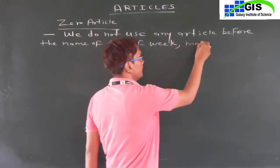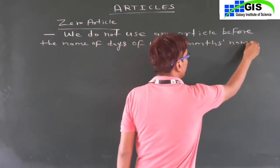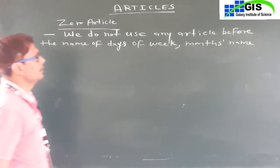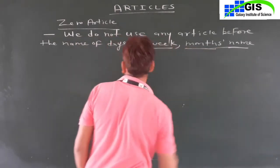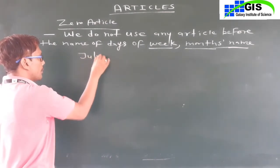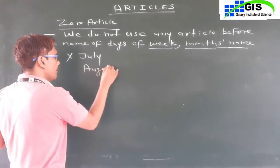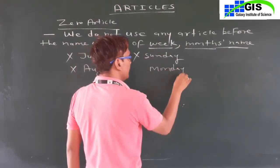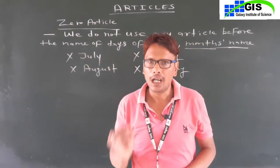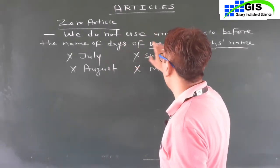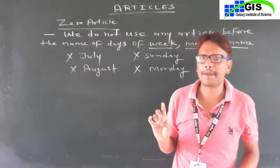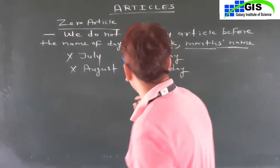We never use any article before the names of days of the week or months. The seven days of the week — Sunday, Monday, Tuesday, Wednesday, Thursday, Friday, Saturday — we never use any article before them. And for months' names we never use any article.